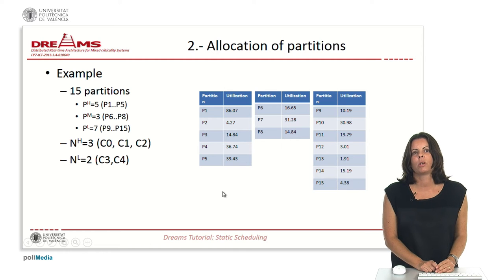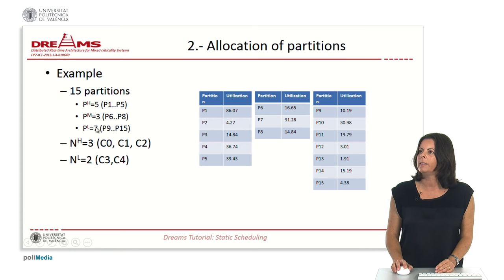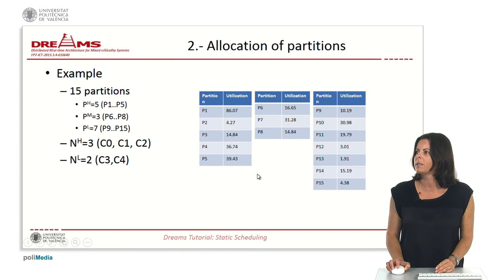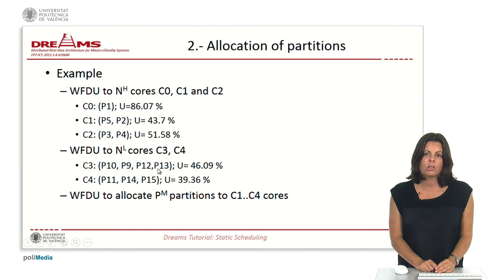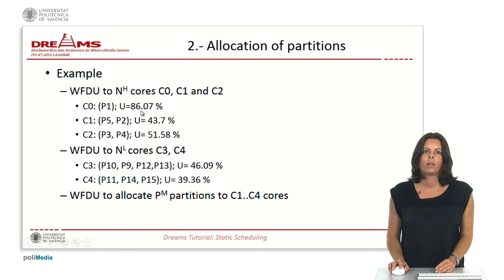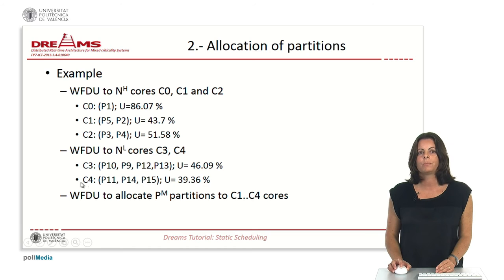As an example to see how this allocation works, we have an example with fifteen partitions. We have three levels of criticality: five partitions for the high level, three for the medium, and seven for the low. We have three cores for the high criticality level and two cores for the low criticality level, numbered 0 to 4. We apply the worst fit decrease in utilization algorithm to the NH cores from C0 to C2. The result shows the allocation of partitions 1 to 5 — the high criticality level partitions — and the resulting utilization of the cores. The same is done for the low criticality level on cores 3 and 4.